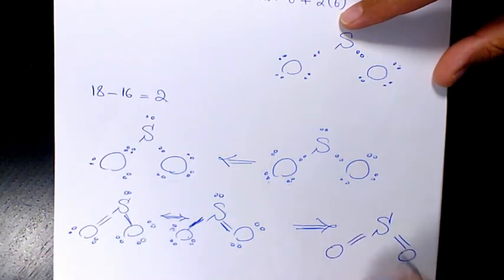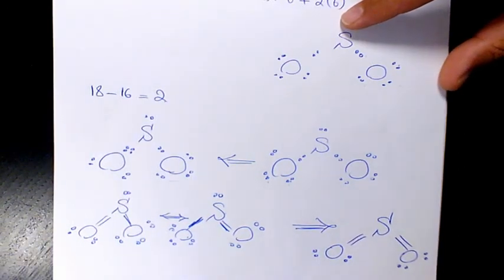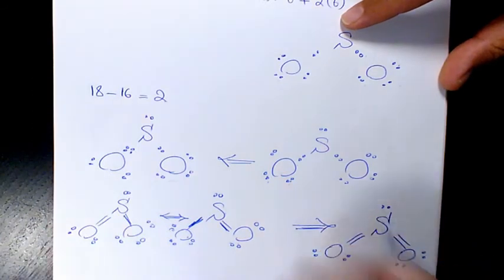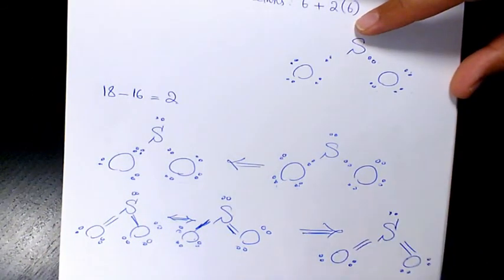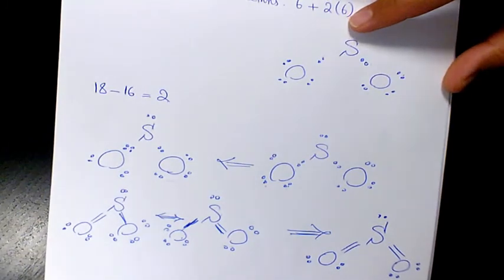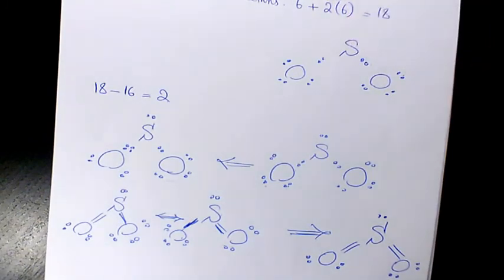A double bond for both oxygens, and we're going to have two lone pairs on each oxygen and one lone pair for the sulfur. So this is going to be the most stable Lewis structure for sulfur dioxide.